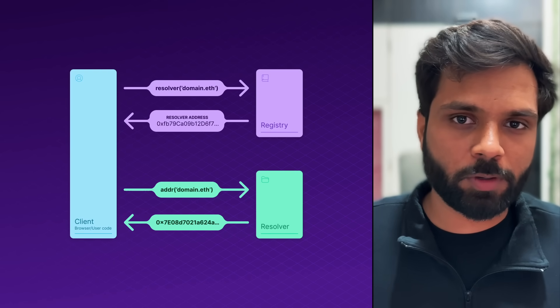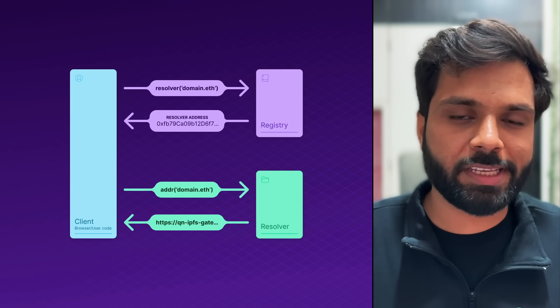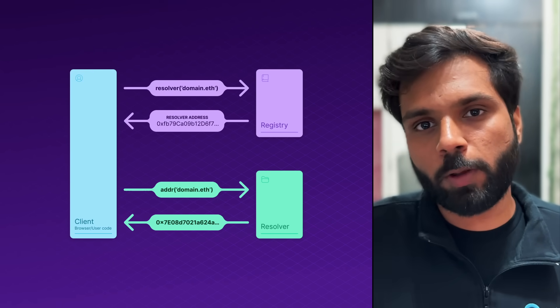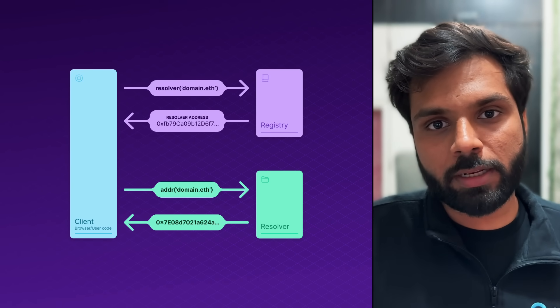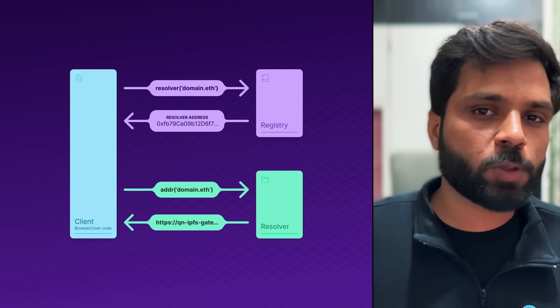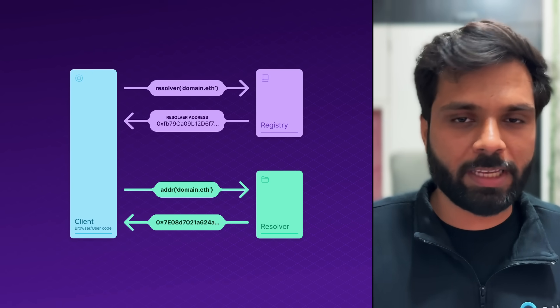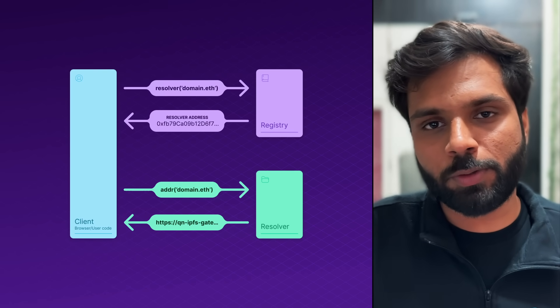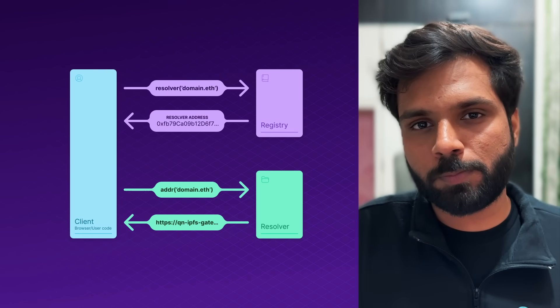The second smart contract is the resolver. The resolver smart contract is responsible for resolving an ENS domain to a wallet address, or if an IPFS file is redirected to that domain. Whenever you want to resolve an ENS domain, you send a request to the registry smart contract, which gives you the address of the resolver for that particular domain. Using that resolver address, you send a request to the resolver smart contract and get the actual address redirected to that ENS domain. There are public resolver smart contracts which ENS uses, but you can also create your own based on ENS standards.